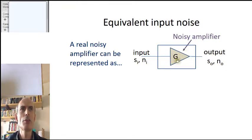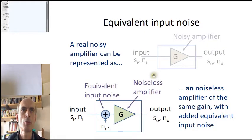Now this is functionally identical to this amplifier here. Same input signal and noise, same output signal and noise, but in this case we've taken all of the noise introduced by the noisy amplifier and moved it to become an equivalent input noise just before a perfect noiseless amplifier. So the additional noise that this amplifier introduces is Ne1, the equivalent input noise, times the gain of the amplifier.